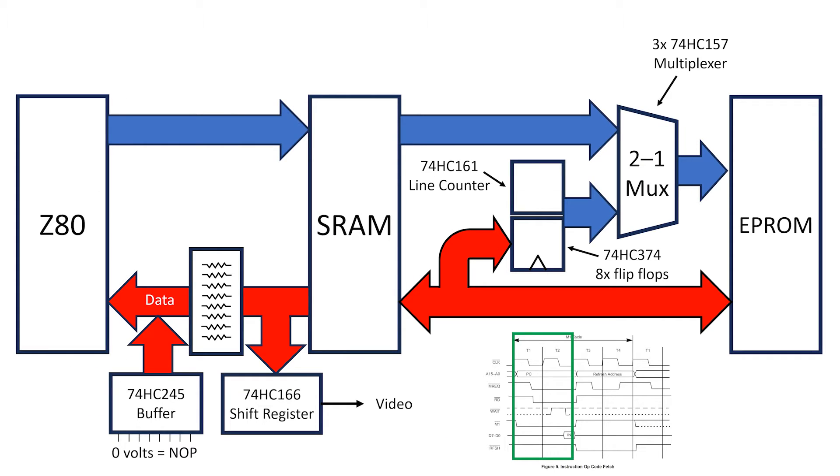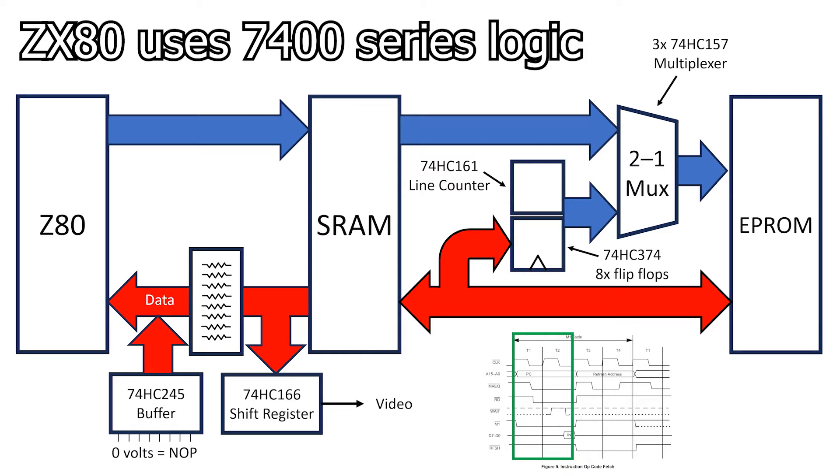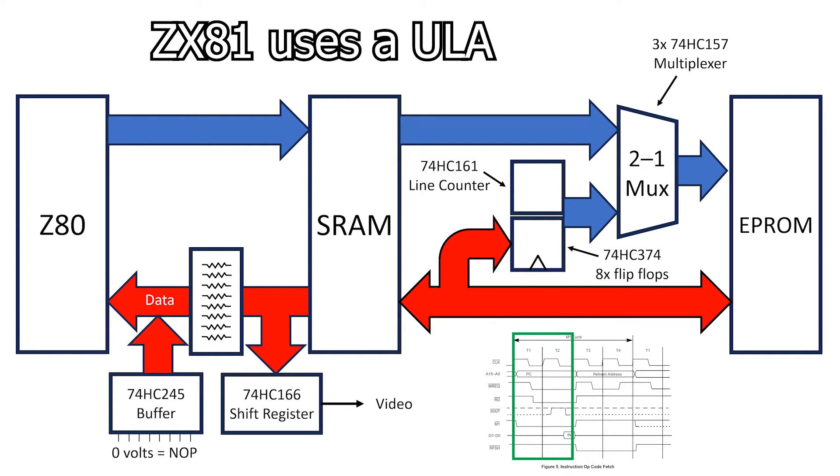This is an approximate block diagram for the ZX80 and ZX81. The ZX80 uses discrete 7400 series logic, while the ZX81 implements this in its unified logic array, or ULA chip.